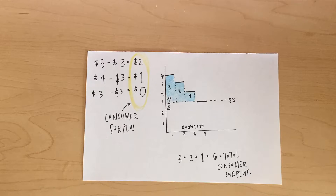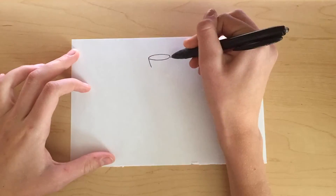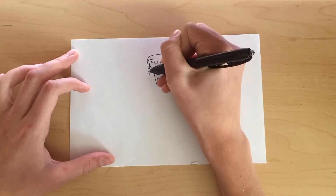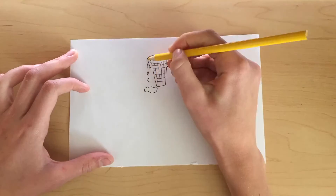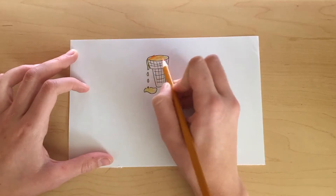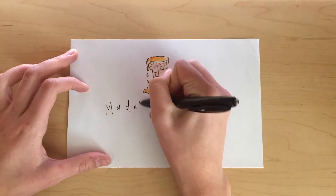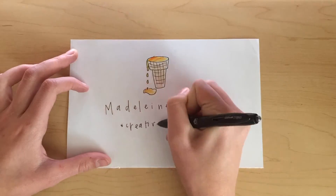In review, consumer surplus is the difference between what I'm willing to pay and what I actually have to pay. And marginal benefit is the satisfaction I get from consuming one additional good or service. That's all, thanks for watching.